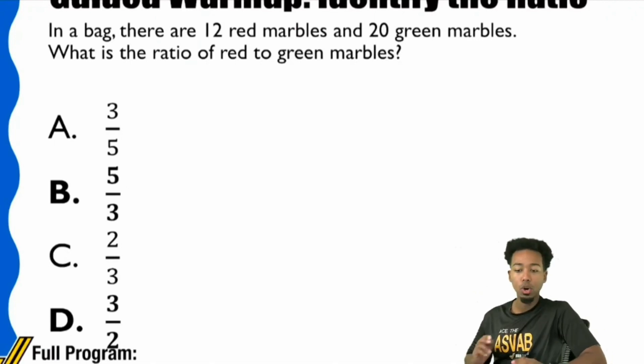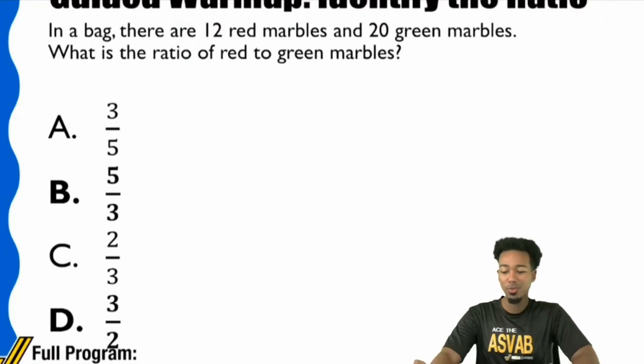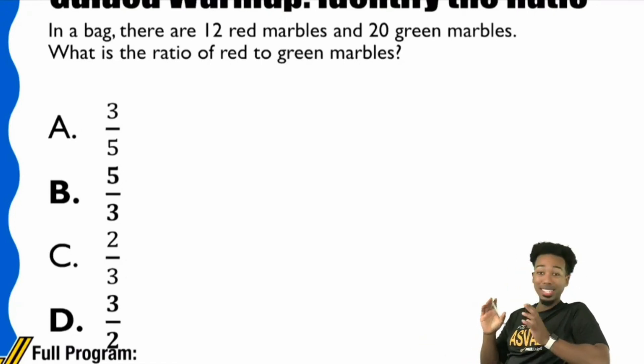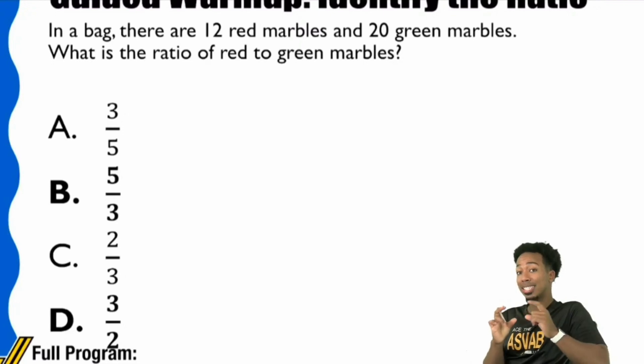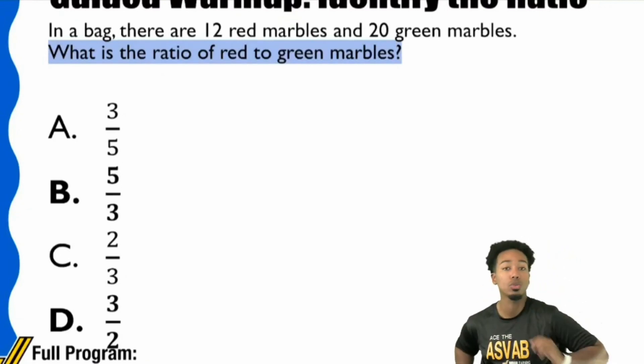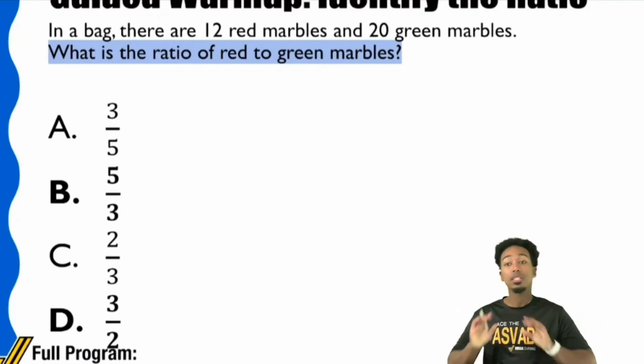The first thing we need to do is always what? When it comes to word problems, what's step one? Read the question. Let's go ahead and read that question first. What is the ratio of red to green marbles? That is the first thing you always want to do when it comes to any word problem. Just read the question sentence.